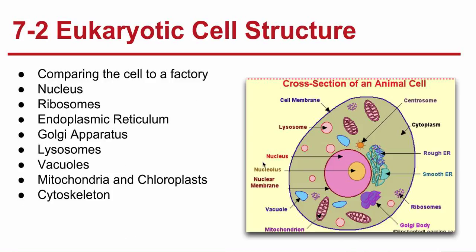Eukaryotic cell structure — we're going to go through most of the organelles of a eukaryotic cell. To help explain this, we're going to compare the cell to a factory. Organelles are structures found in cells — the name means 'little organs.' They perform many different activities that help the cell function. The cell is divided into two major parts: the nucleus, shown in pink, and the cytoplasm, which is the gray-green liquid surrounding the nucleus.